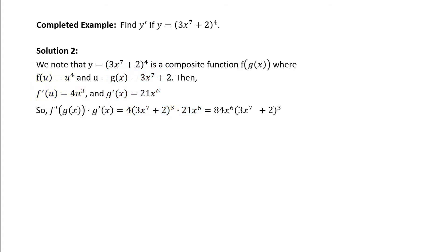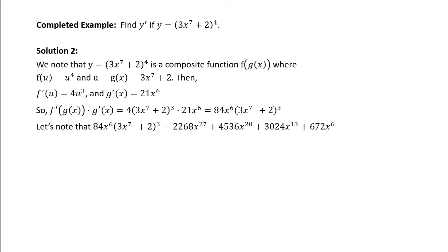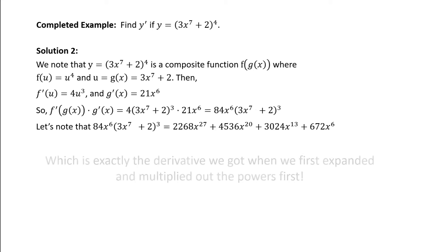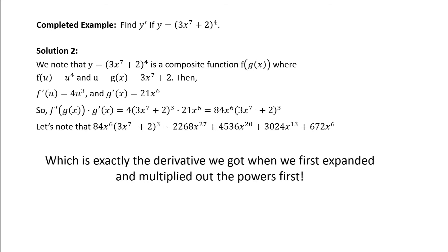If you multiply out that derivative, it comes out to 2268x to the 27th plus 4536x to the 20th plus 3024x to the 13th plus 672x to the 6th. This is exactly the derivative we got when we first expanded and multiplied out the powers first.